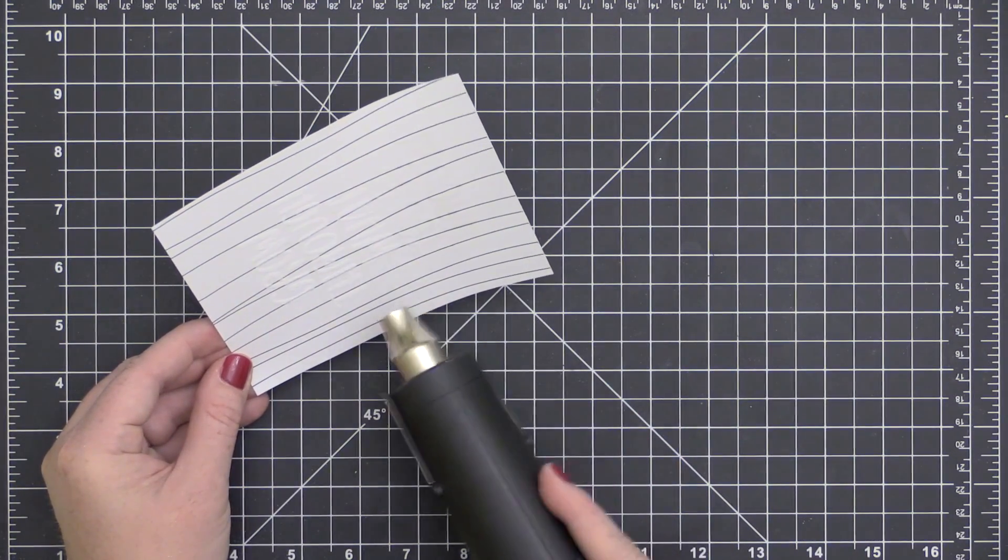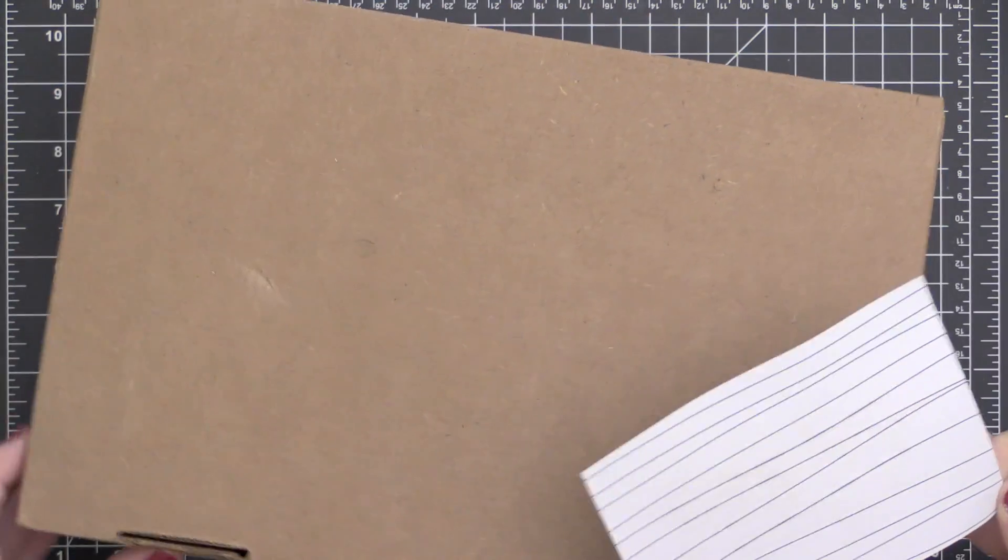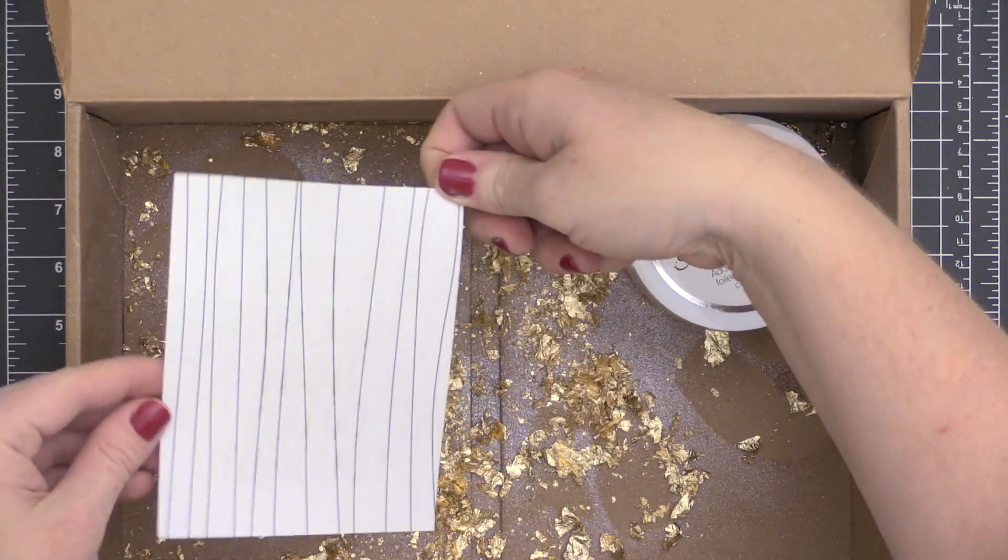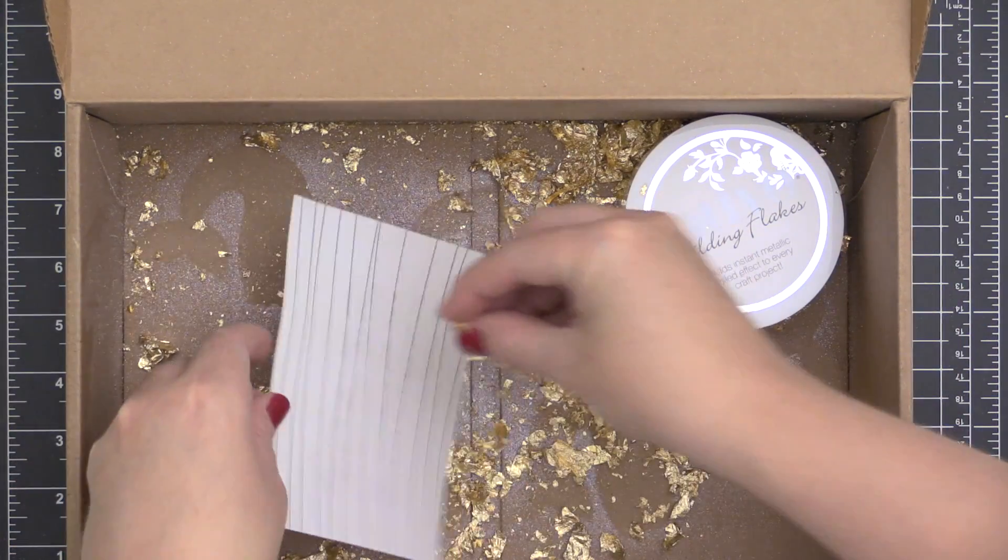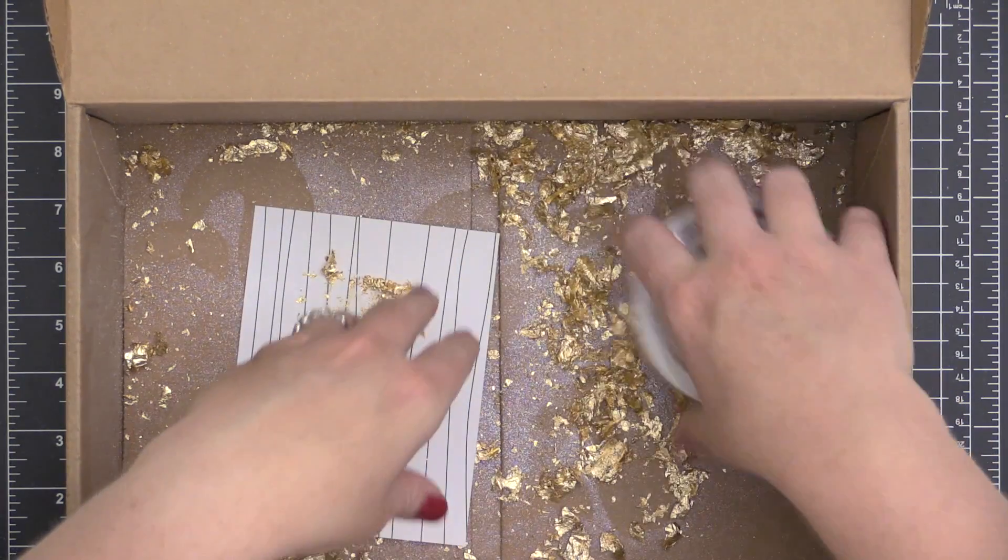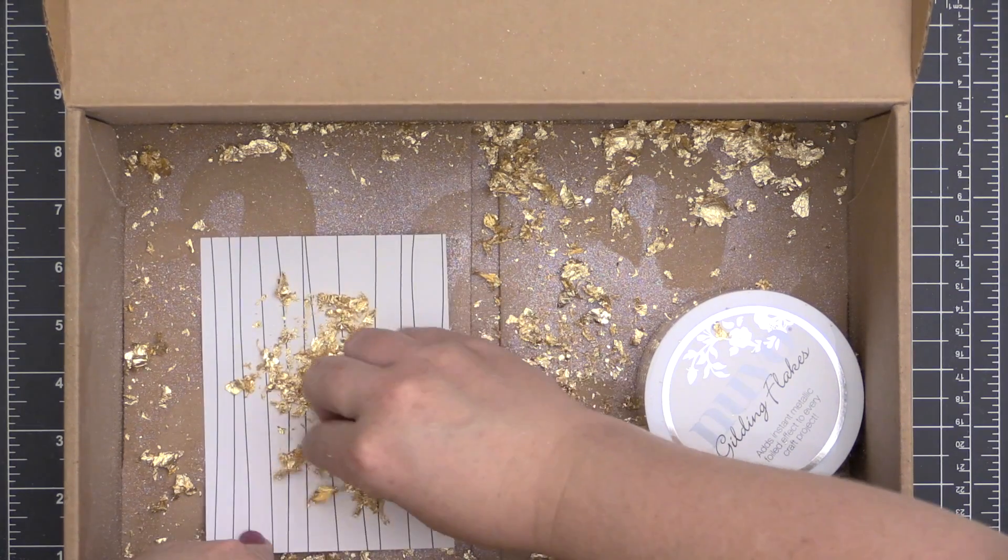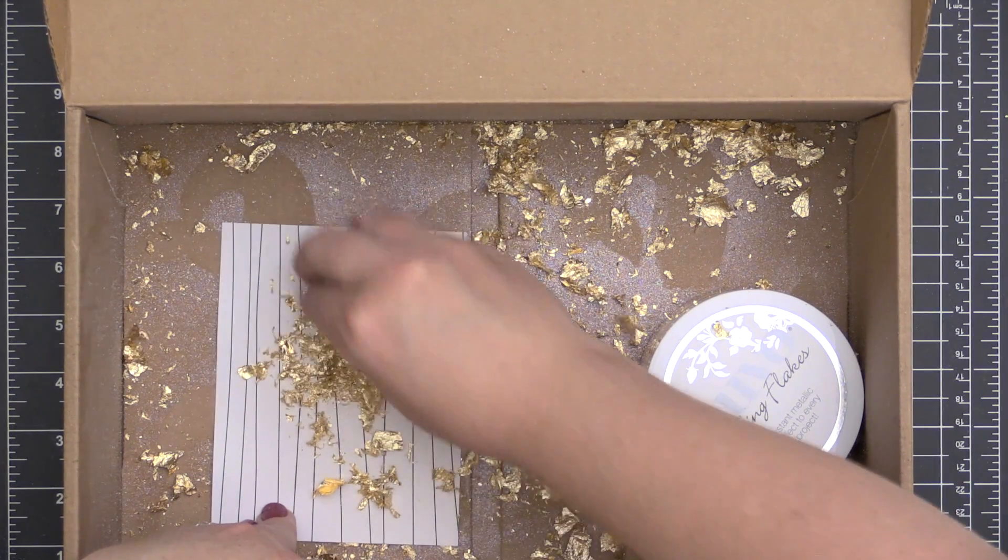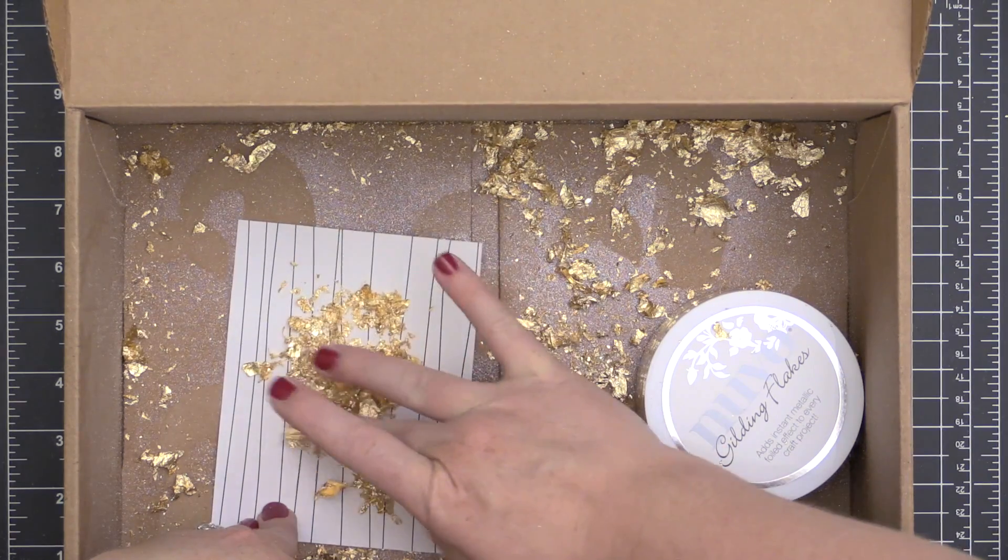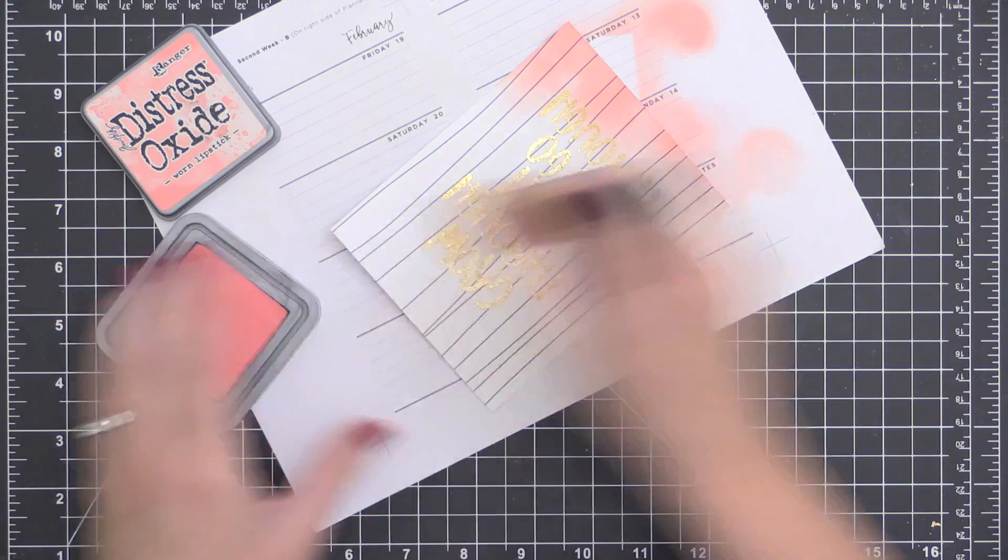I went ahead and did the same process. I prepped the surface of my paper using my powder tool. I stamped my sentiment in some Versamark ink and added that sticky embossing powder, then heat set it just until it was shiny. Now I'm going to take these gold Nouveau gilding flakes once again and add them over this stamped image. That sticky embossing powder is going to grab all of those gilding flakes and hold on to it so that I get a really cool gilded image.